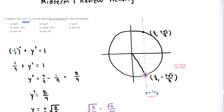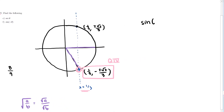The point we're interested in is (1/3, −2√2/3). We haven't answered the questions yet, but we've set ourselves up to answer all of them directly. Sine of theta is the y-coordinate of the corresponding point on the unit circle. Without even knowing the exact angle, we know sine of theta = −2√2/3.